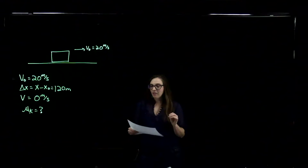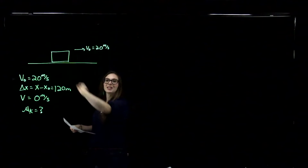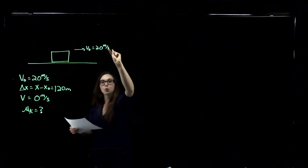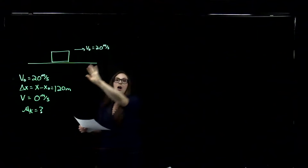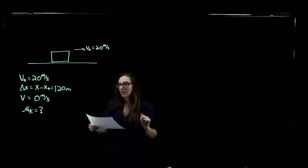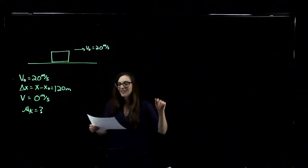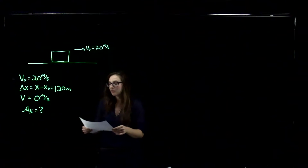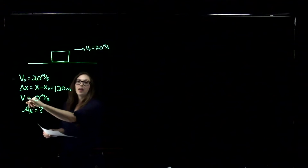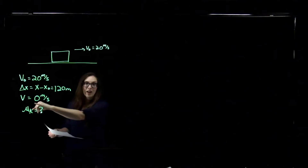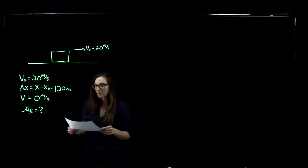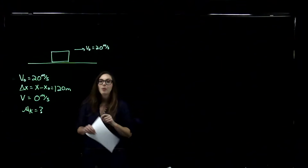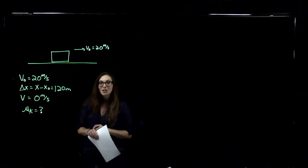We have a hockey puck given an initial speed of 20 meters per second on a frozen pond. The puck remains on the ice, slides a distance of 120 meters, and eventually slows down and comes to rest. The final velocity is 0 meters per second. We're going to determine the coefficient of kinetic friction between the puck and the ice.